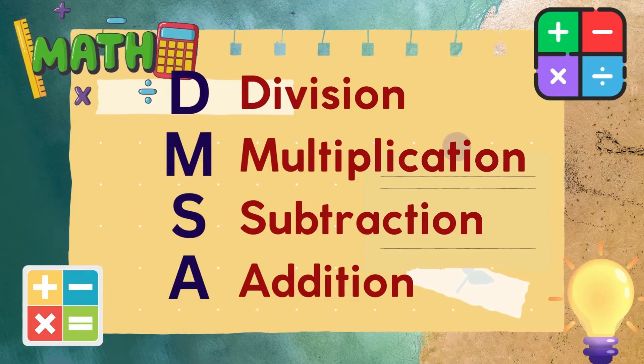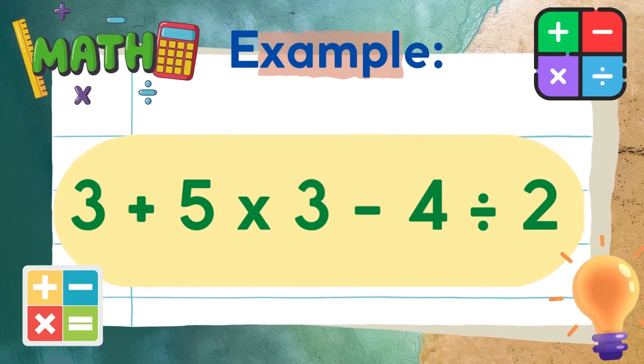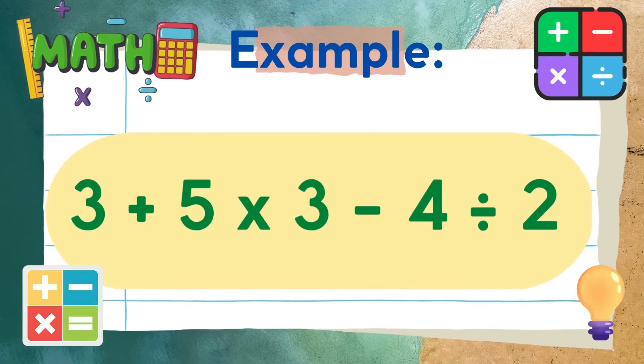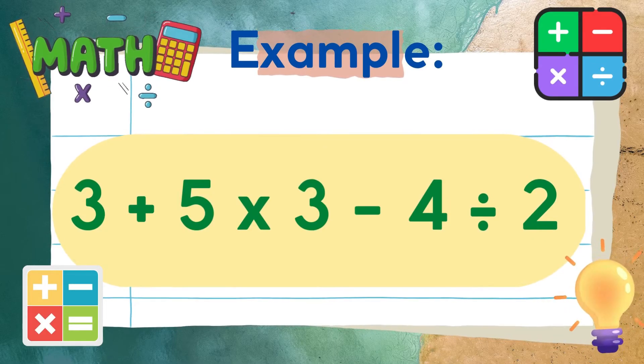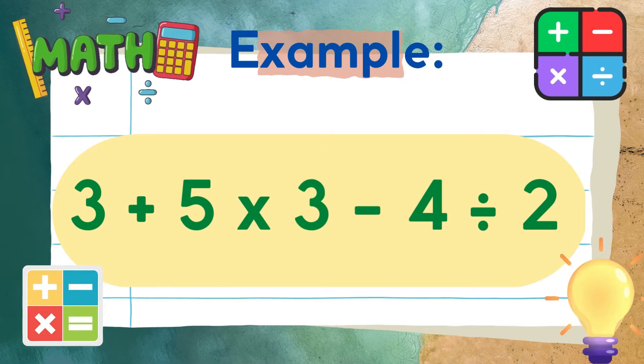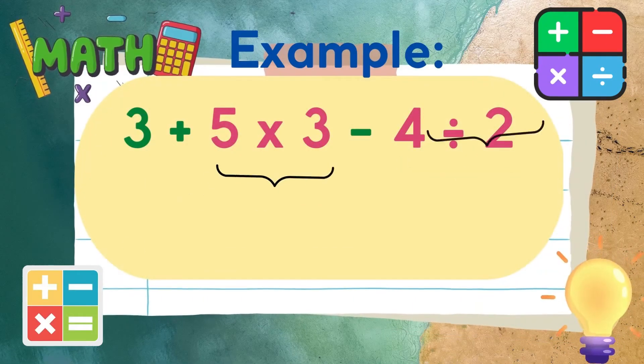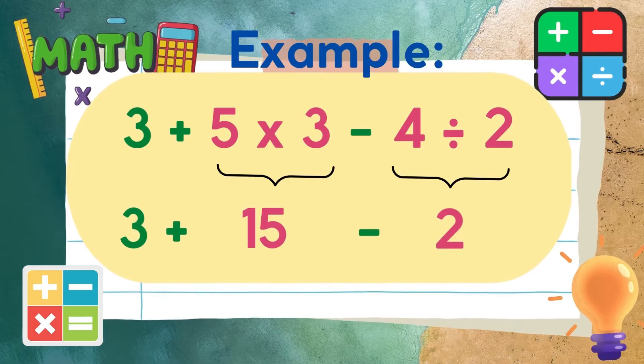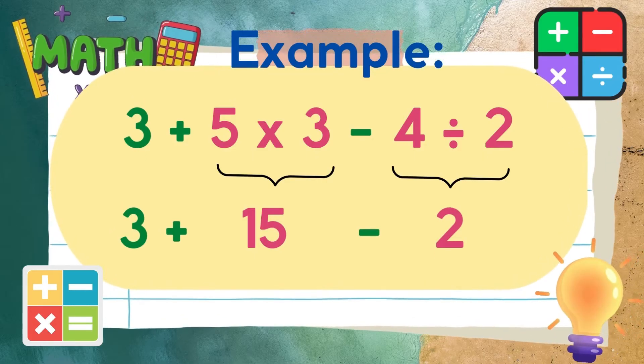Let's have another example: 3 plus 5 times 3 minus 4 divided by 2. In this given example, we need to multiply and divide first before we finally add and subtract. So 5 times 3 is equal to 15 and 4 divided by 2 is equal to 2.